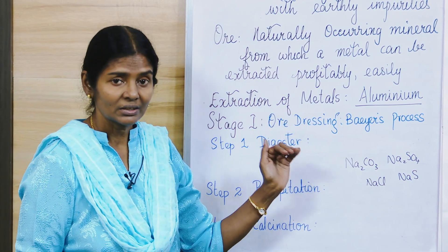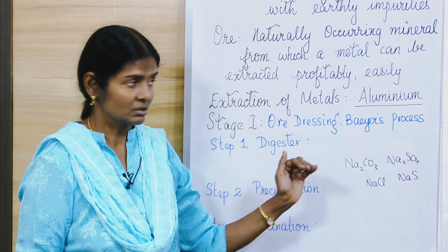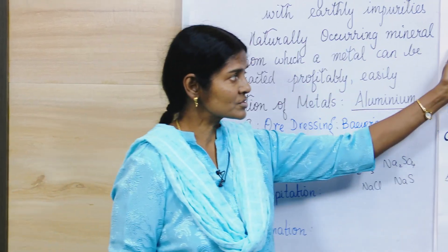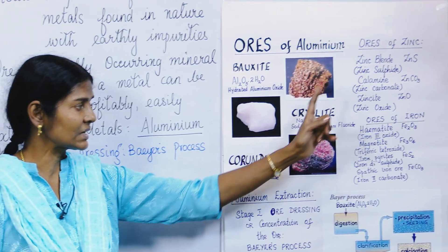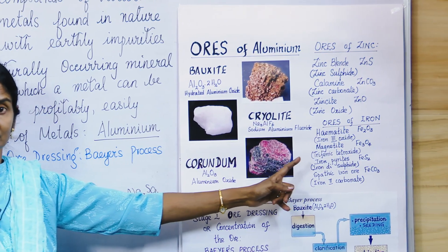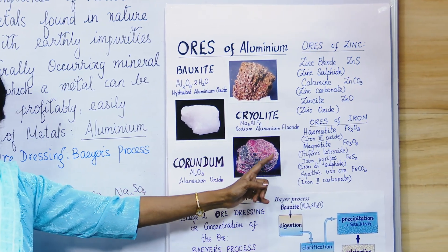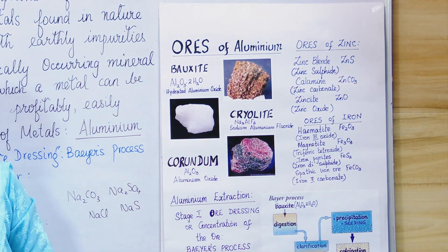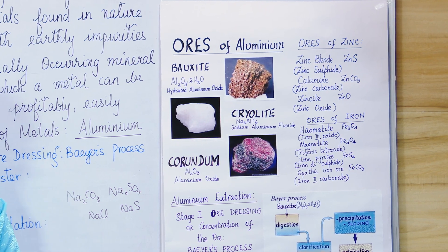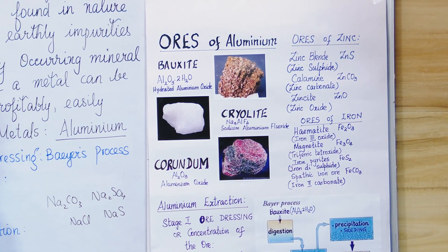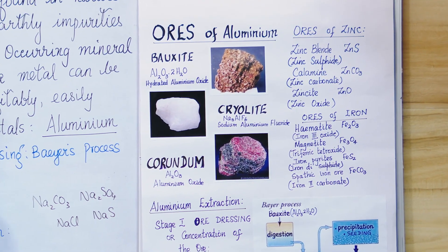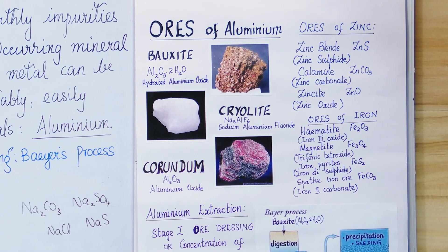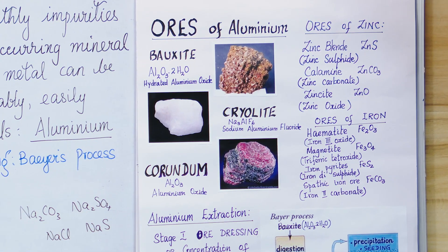Before getting to extraction of metals, we need to learn the ores of aluminium, zinc, and iron. All we need to know is the name, the common name, and the formula — these three things.